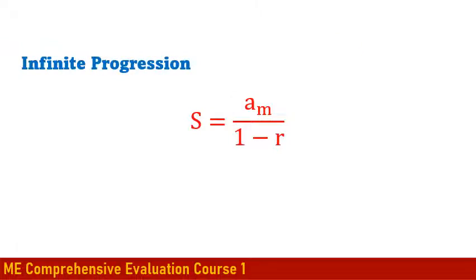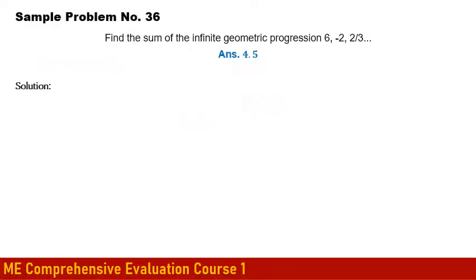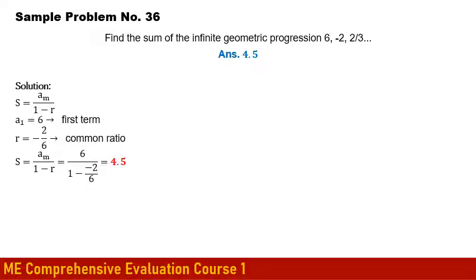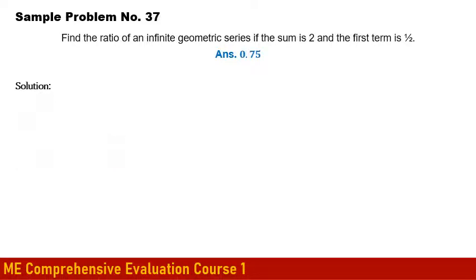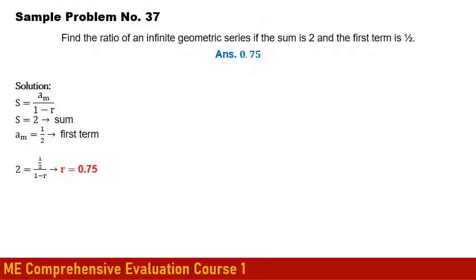Infinite Geometric Progression: The sum of an infinite GP is S = a₁/(1−r). Sample Problem 1: Find the sum of 6, −2, 2/3, ... With a₁ = 6, r = −2/6 = −1/3, S = 6/(1−(−1/3)) = 4.5. Sample Problem 2: Find the ratio if S = 2 and a₁ = 1/2. Solving 2 = (1/2)/(1−r) gives r = 0.75.